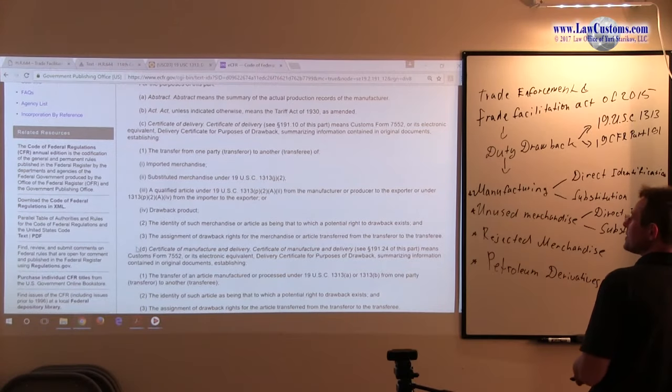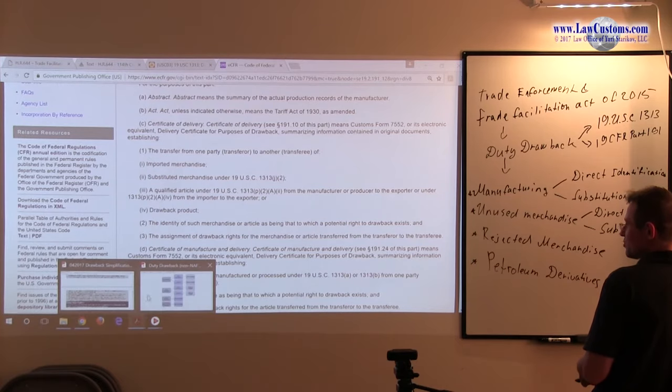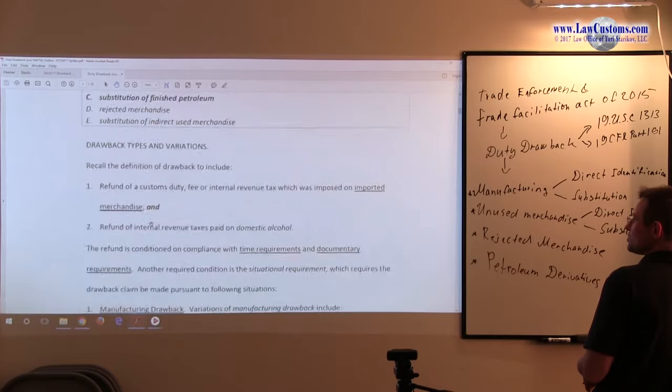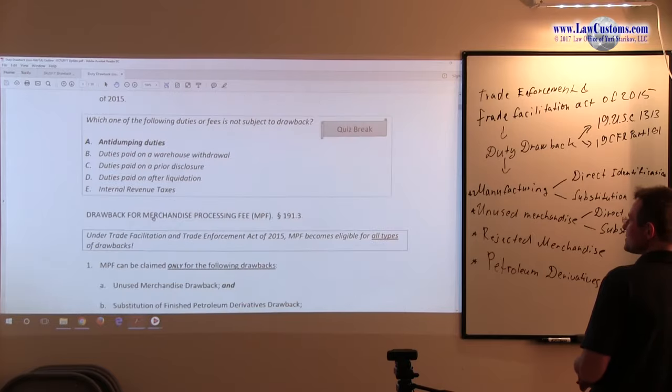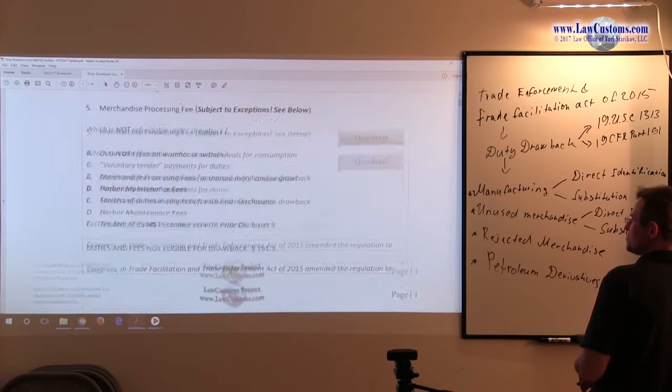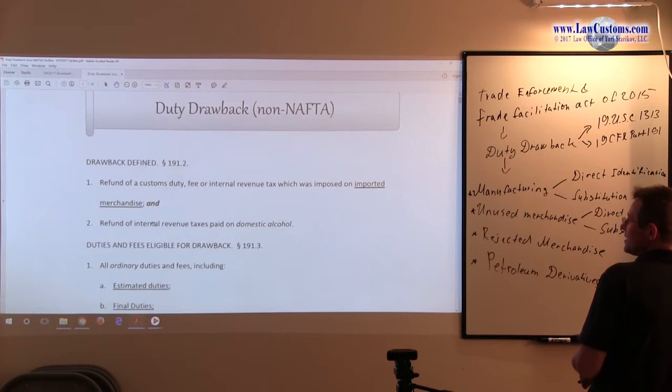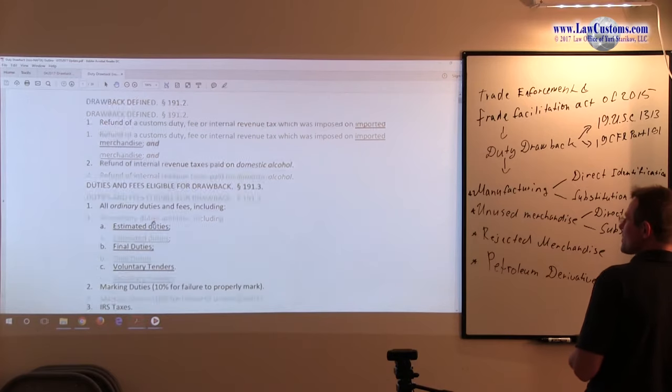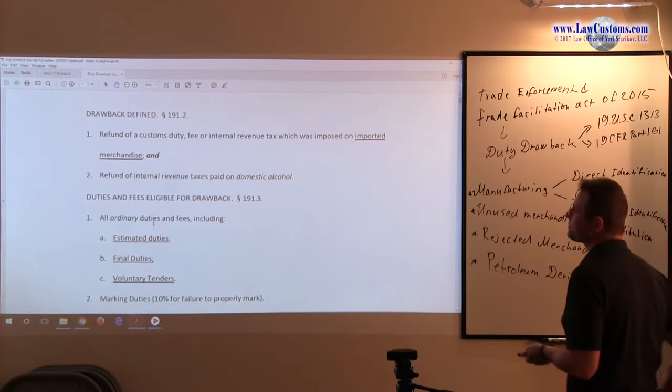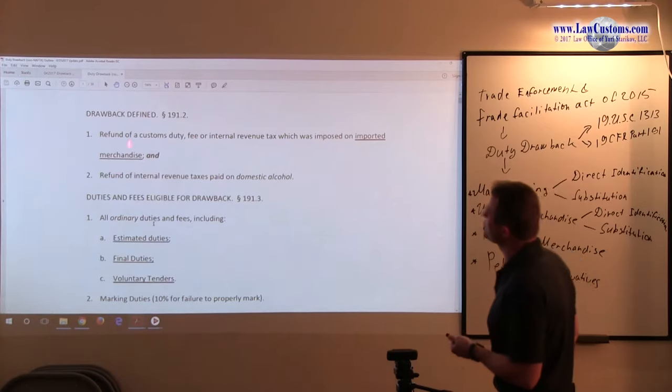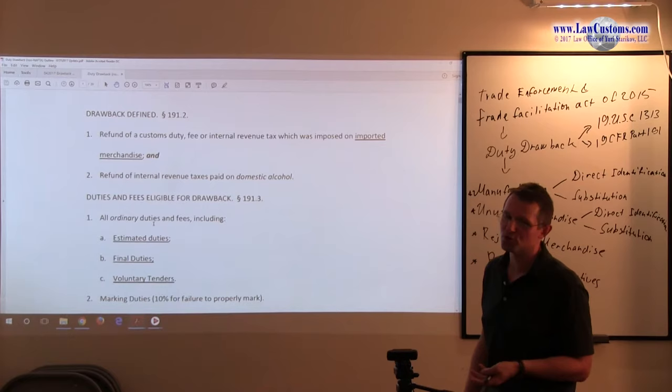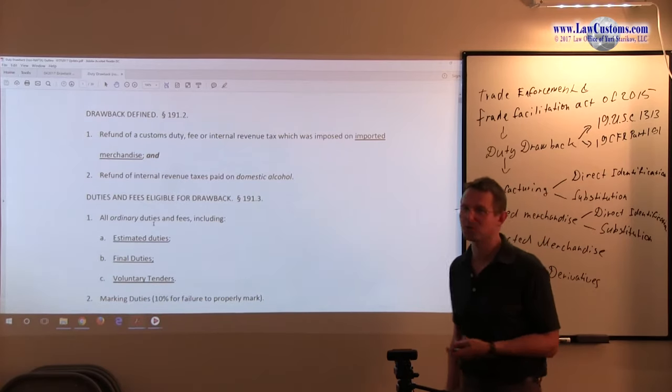Those are the changes. Now let's go to the outline and see what's going on as far as the flow is concerned. Alright, so no NAFTA as mentioned before. Drawback defined as the duty, fee, or tax which was imposed on imported merchandise. There has to be some kind of import.